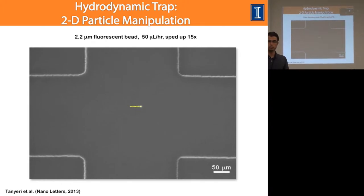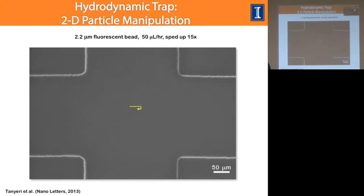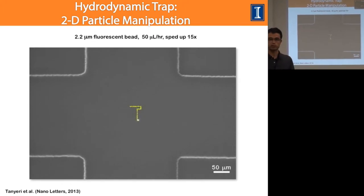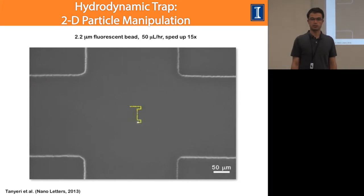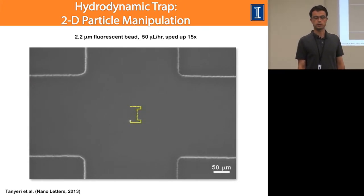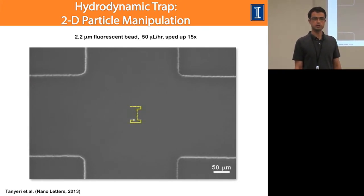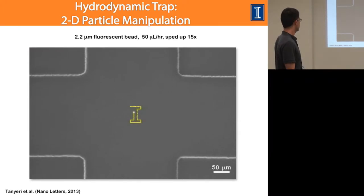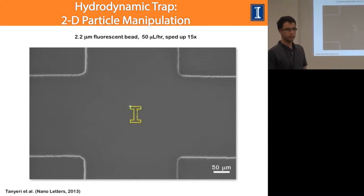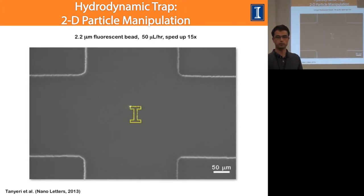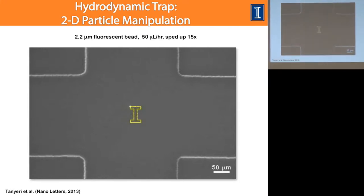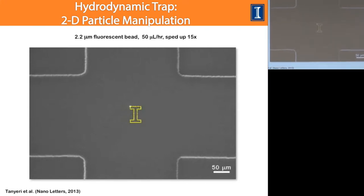Using this method, we use fluid flow to trap and manipulate micron and nanoscale particles. We can manipulate particles in two dimensions. This movie shows an example of trapping and manipulating a 2.2 micron fluorescent bead using fluid flow. Now I'm going to describe how this method works.